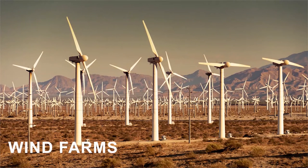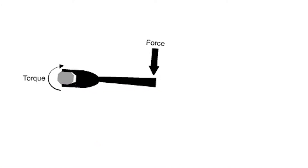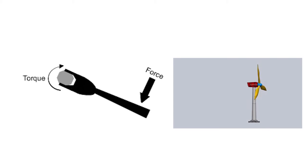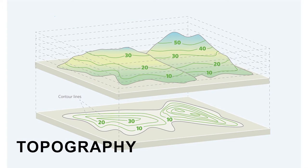Some scientific terms: Wind farms are an area of land with a grouping of wind turbines. Torque is the force that causes rotation, here rotation of wind turbine blades. Topography is the arrangement of natural and artificial physical features of an area.